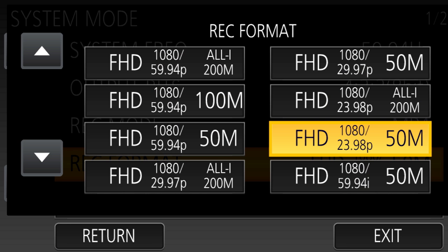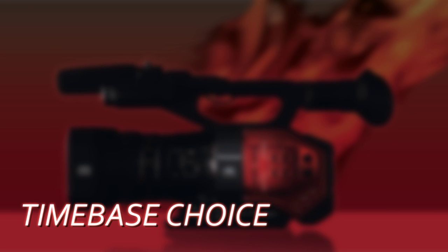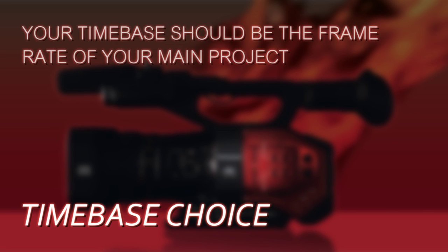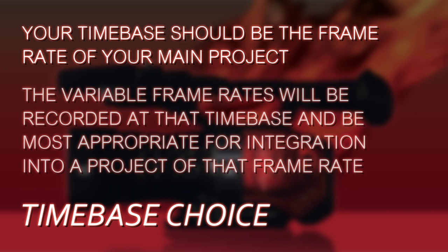Now you have your choice of 24, 30, or 60 frames per second. Whatever your main program is that you're already recording, you want to choose that same mode here so that the footage will integrate with your main program. So if you're doing a short film in 24p, choose 24p here. If you're shooting live sports at 60 frames per second, choose 60p.